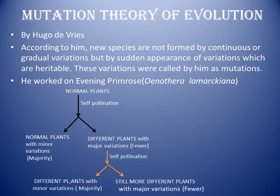The first — practically the third — theory on evolution is the Mutation Theory of Evolution, given by Hugo de Vries. According to him, new species are not formed by continuous or gradual variations. It is not a very slow process. Whenever new species are formed, they are always produced by the sudden appearance of variations which are heritable. These variations were called mutations by Hugo de Vries.